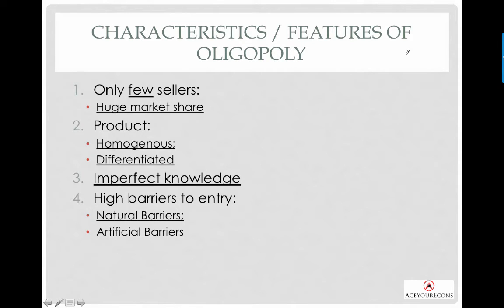Barriers to entry are a very important point. You need to apply what you've learned in theory to real-life examples. If you are unsure about the various kinds of barriers to entry, please review the previous lecture on monopoly. Using Samsung and Apple as examples, they have substantial artificial barriers to entry — first of all, you need a government license to produce smartphones.